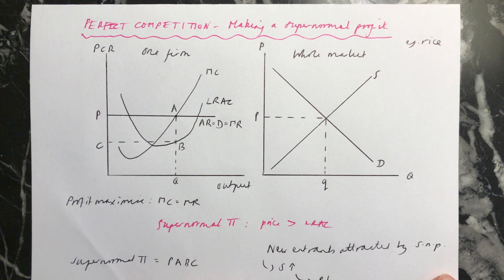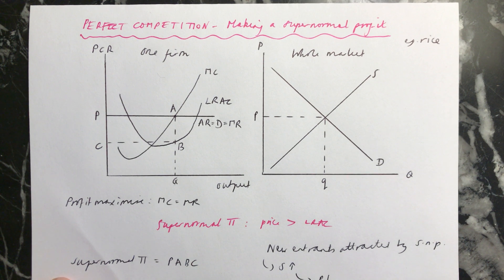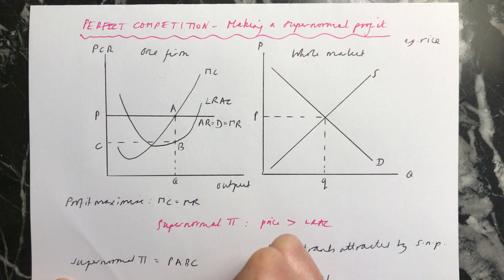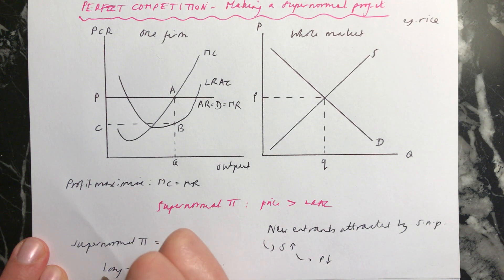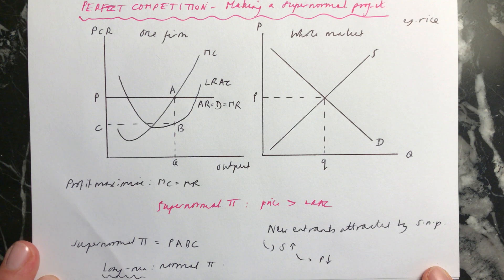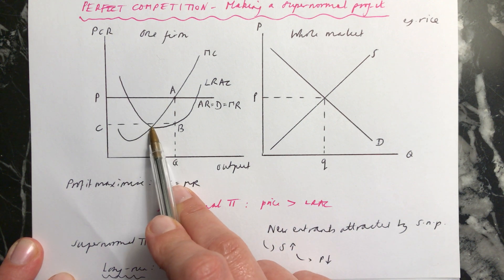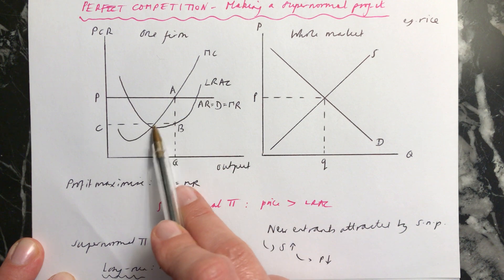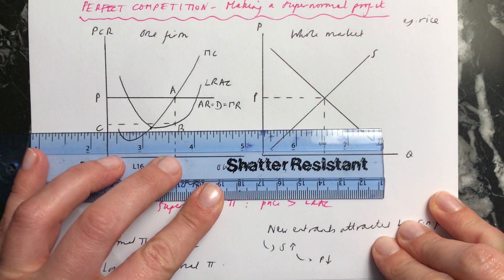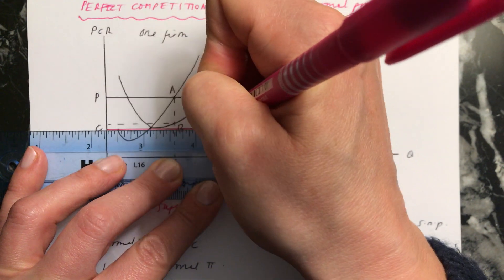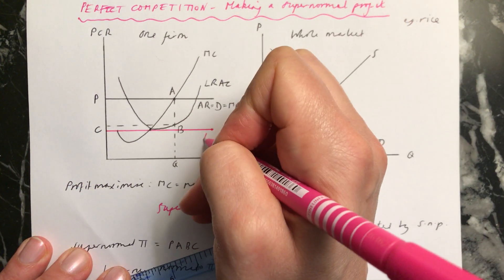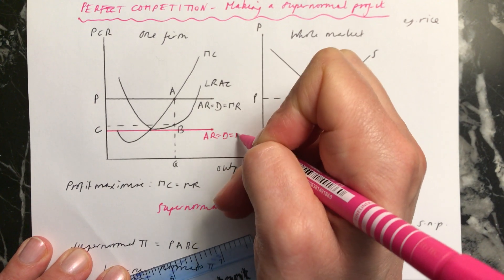We need to engineer the diagram so that it looks right. We know that in the long run in perfect competition we make normal profits — so that's important to remember. We need to end up in that situation of making normal profits. So you need to find the lowest point where your marginal cost is intersecting your long run average cost. That is where we need to end up with our new demand curve, average revenue curve, marginal revenue curve — so this is going to be AR equals D equals MR1.